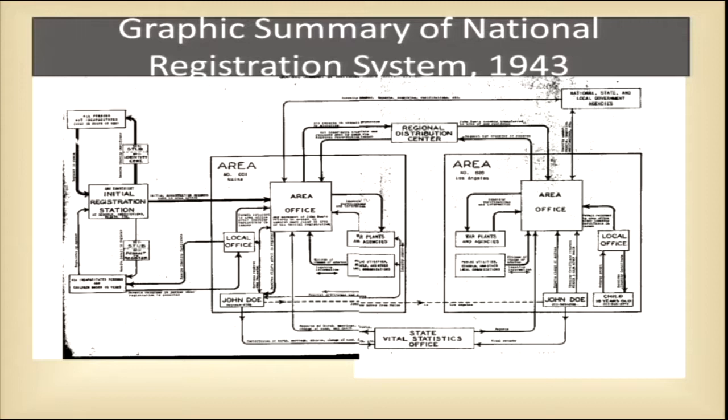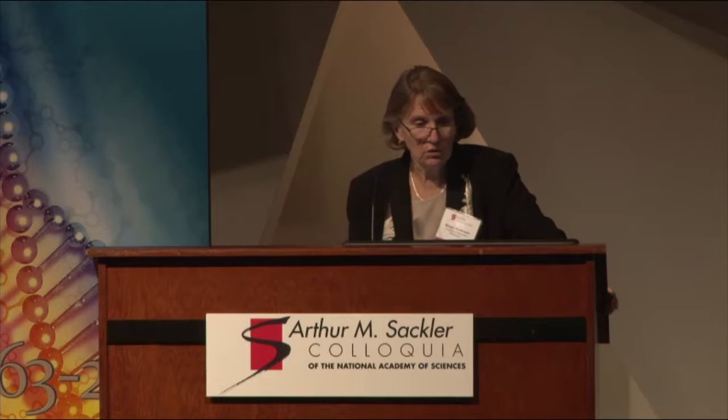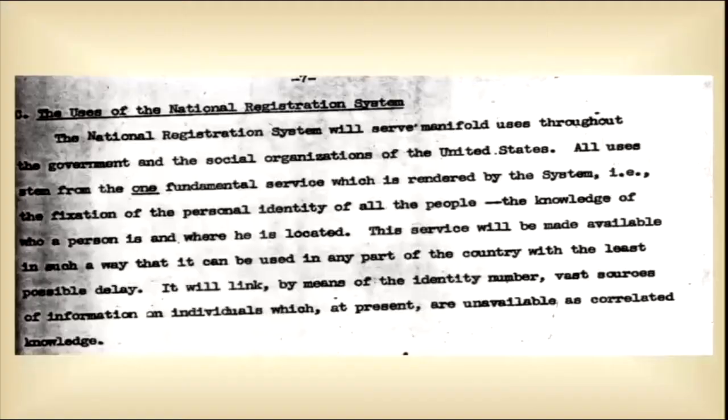There's a big report that goes with this on the uses of population registration systems. The national registration system would serve manifold uses: fix the personal identity of all people, the knowledge of who a person is and where he is located, and it would be linked by means of an identity number. Vast sources of information on individuals at present are unavailable as correlated knowledge.